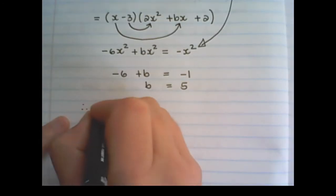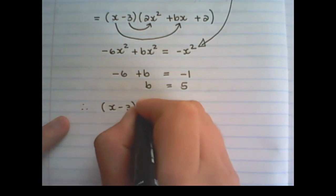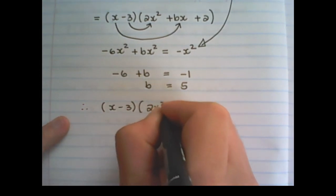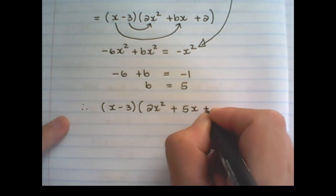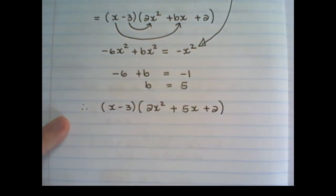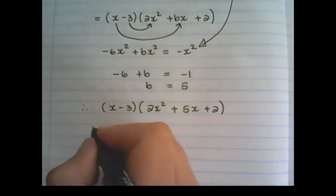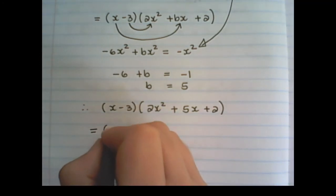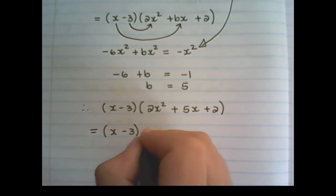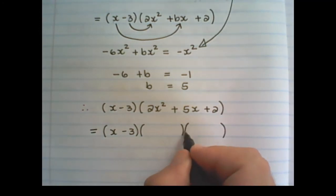So therefore we have x minus 3 times 2x squared plus 5x plus 2. But always look if you can factorize further. The second bracket is a trinomial, and I can factorize this trinomial further.